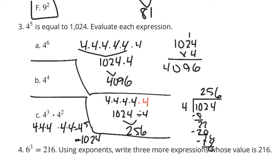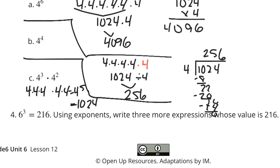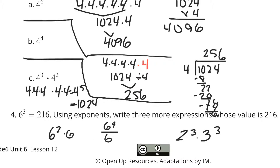For our next question, 6 to the 3rd is 216. Using exponents, write three more expressions whose value is 216. We could have 6 squared times 6, because that really is just 6 times 6 times 6, which is 6 to the 3rd. You could also have 6 to the 4th divided by 6, because that will get you 6 to the 3rd. Another one could be 2 to the 3rd times 3 to the 3rd — you have the same exponents, so you can just do 2 times 3, which is 6 to the 3rd. That works when you have the same value of the exponents; you can multiply the actual bases together.